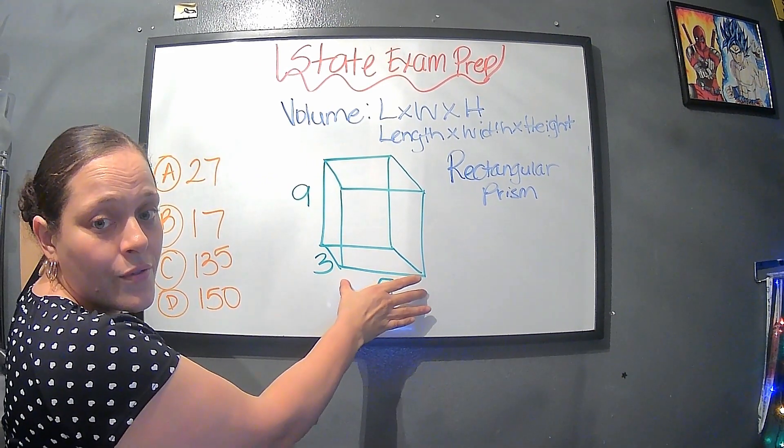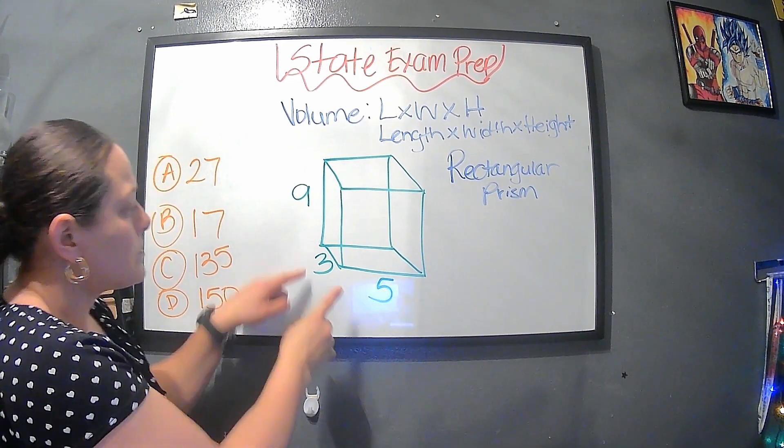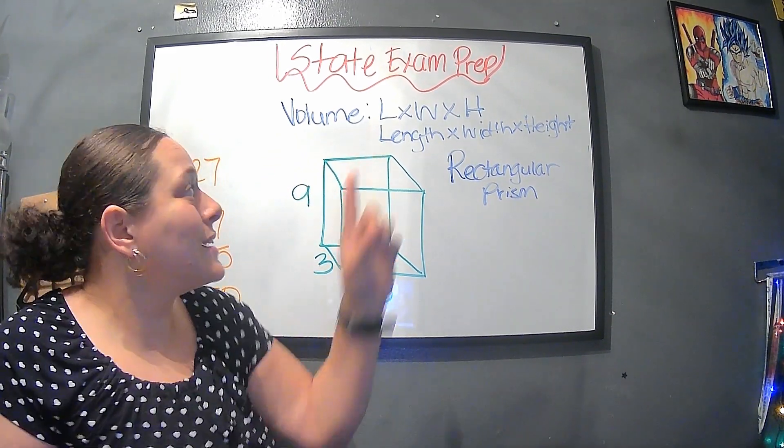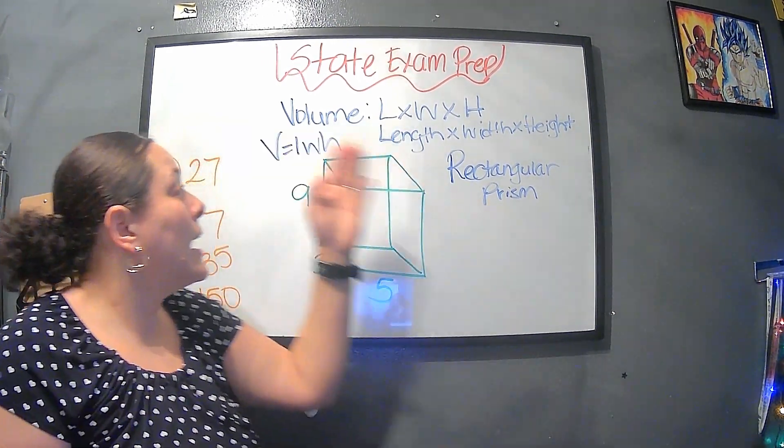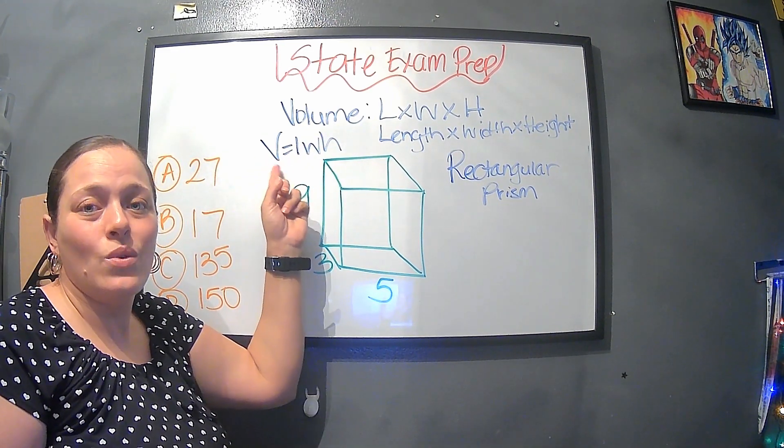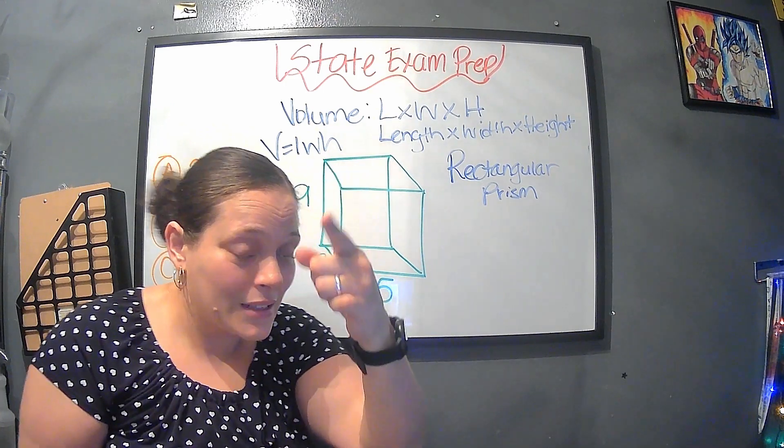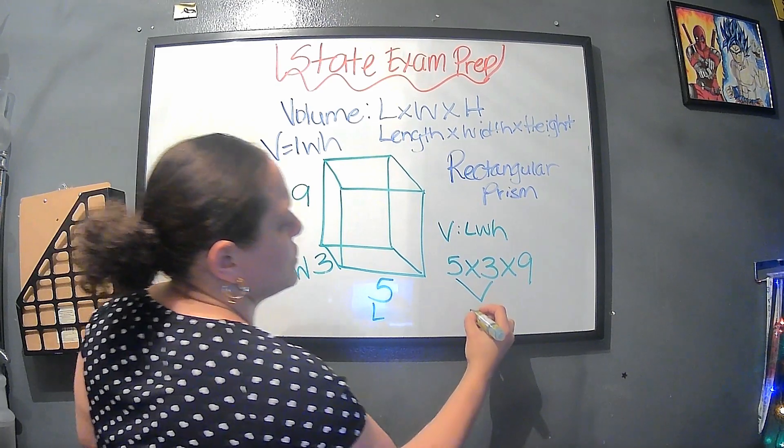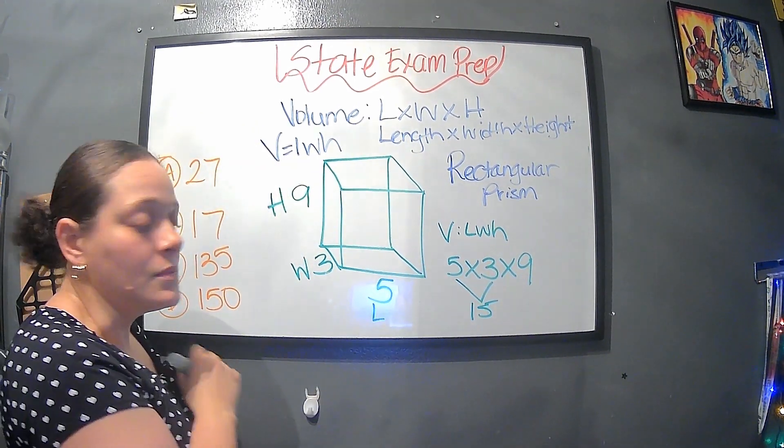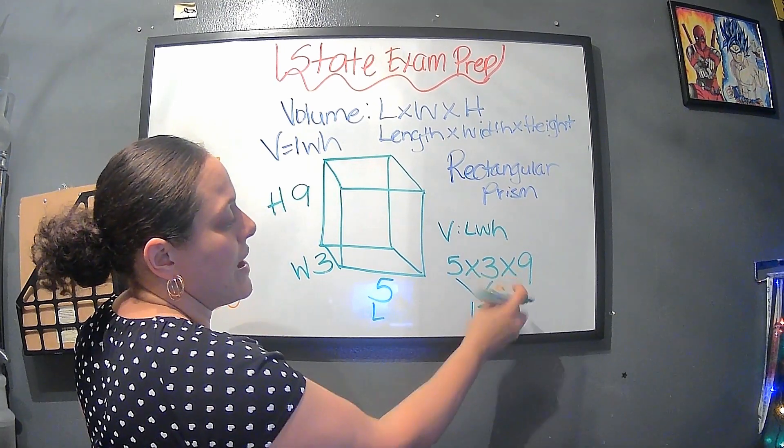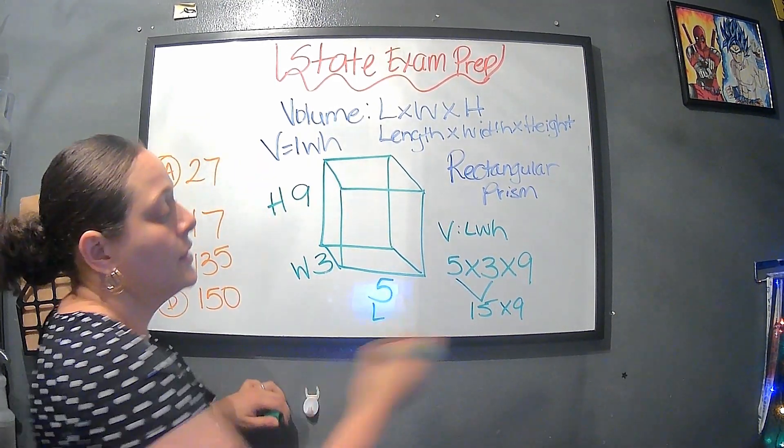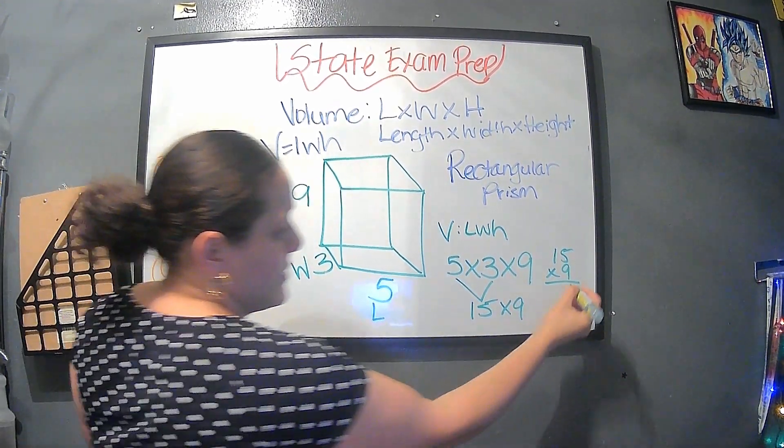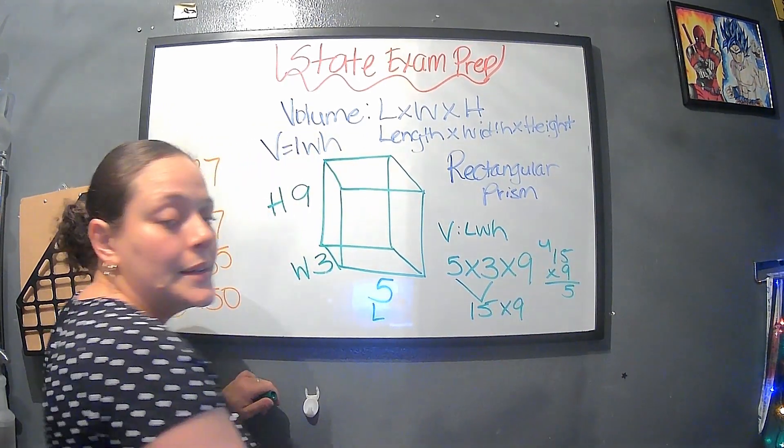In this case, the five would stand for the length, the three would be the width, and the nine would be the height. When it says times, we have to multiply those numbers. In the state exam, you will see V equals LWH. So now you know what that stands for. If we did this, it's five times three equals 15. And now we're not done yet, because now we have to multiply by nine. When we multiply by nine, nine times five is 45 and nine times one is nine.